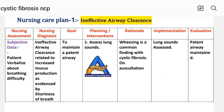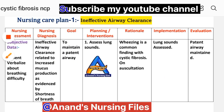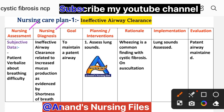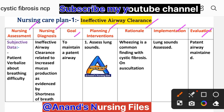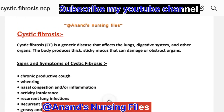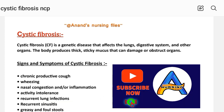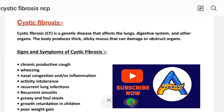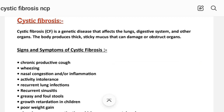In this video, different nursing process steps will be used: nursing assessment, diagnosis, goal, planning, intervention, rationale, implementation, and evaluation. Here is a short introduction — what is cystic fibrosis? Cystic fibrosis is a genetic disease that affects the lungs, digestive system, and other organs. The body produces thick, sticky mucus that can damage or obstruct organs.